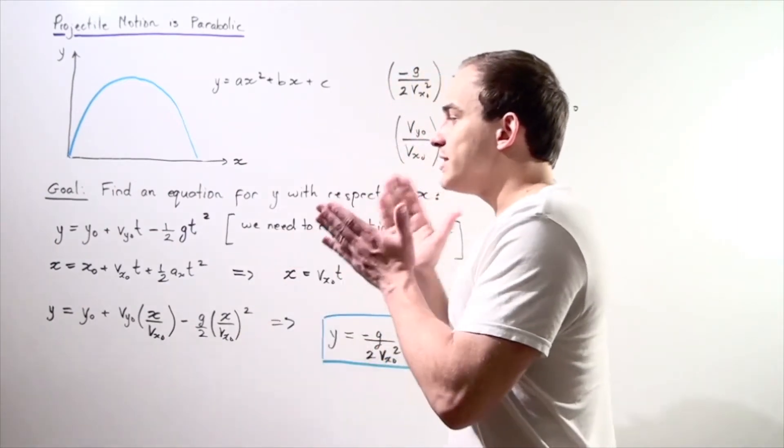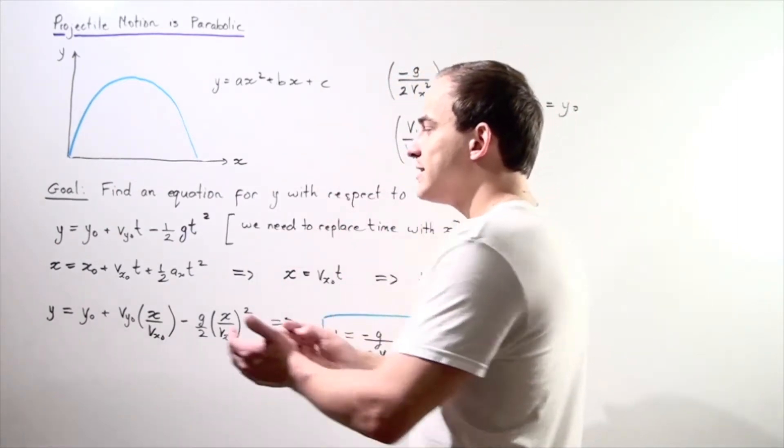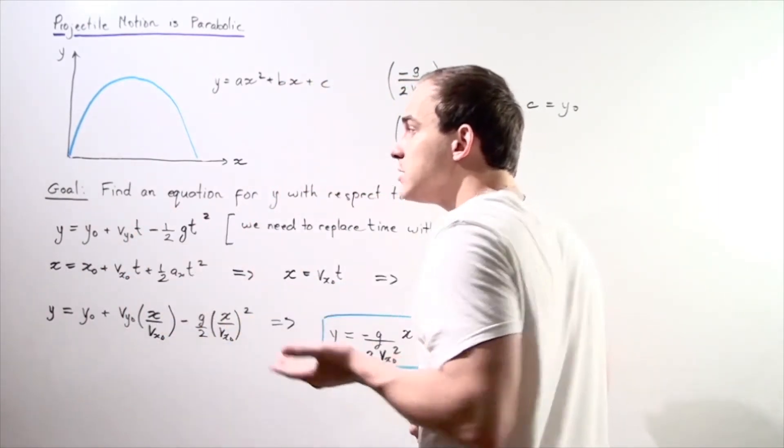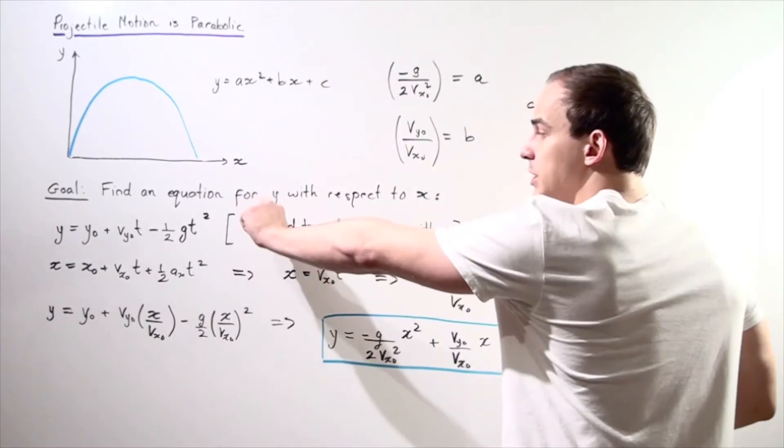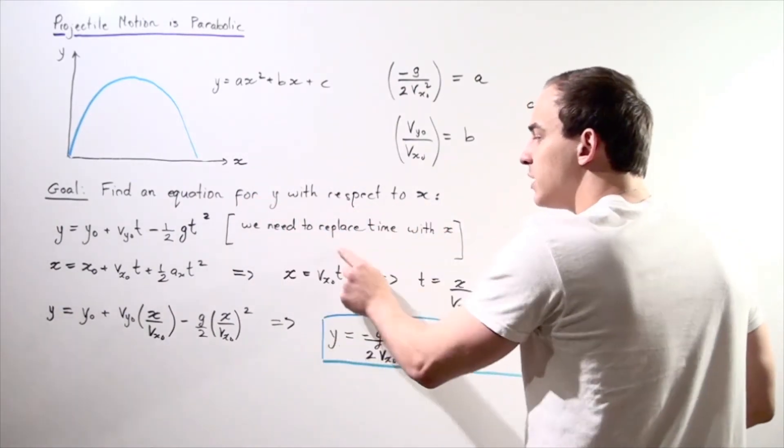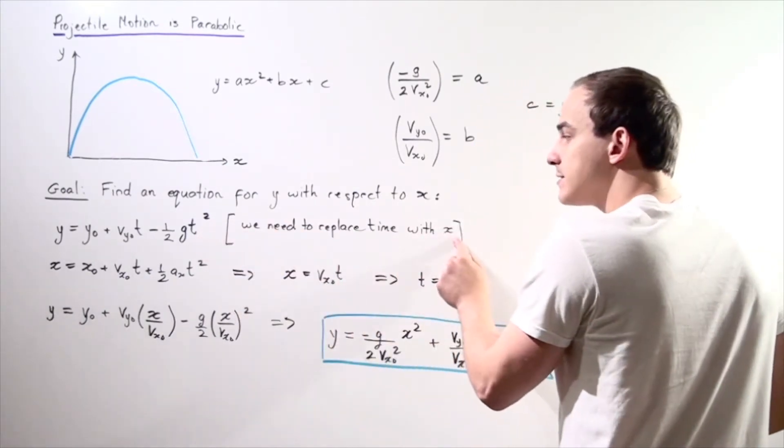So what we essentially need to do is take this equation and replace the t term with the x term, because we're finding an equation for y with respect to x. So we need to replace the t term with x.